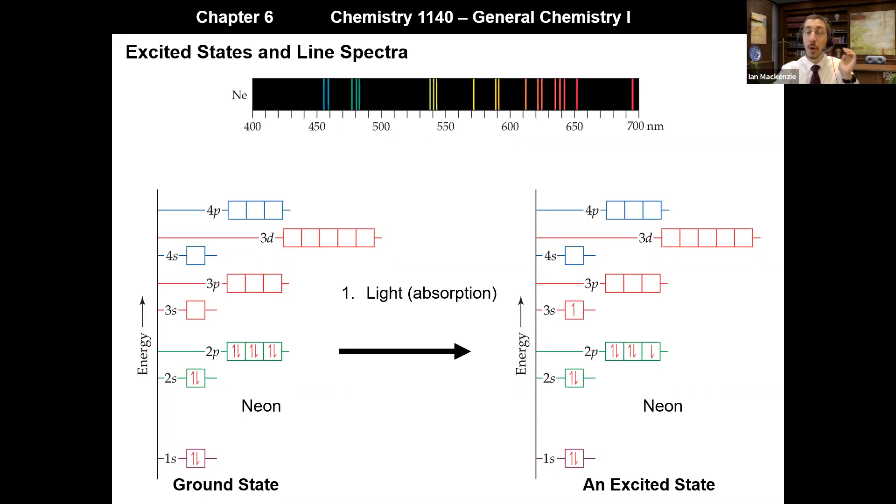The first is we can do absorption of light. So if you shine light of the right wavelength, you can promote an electron to a higher energy orbital.